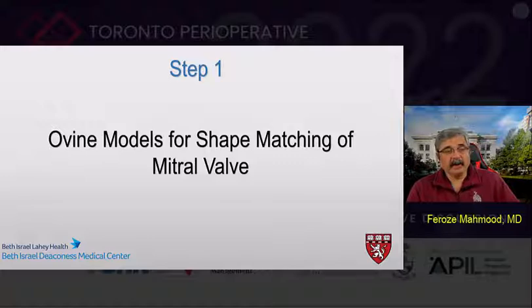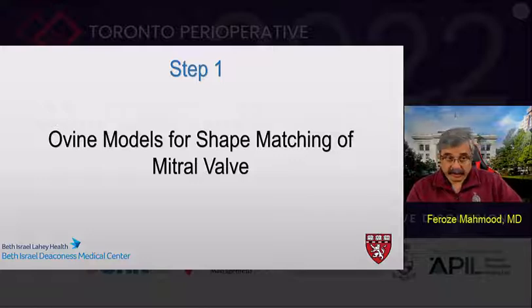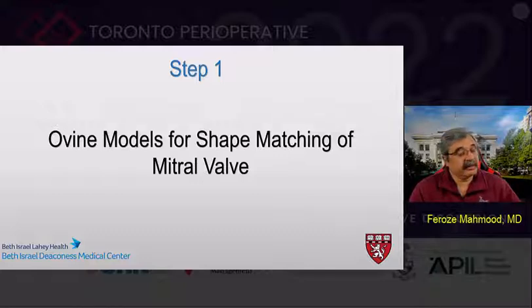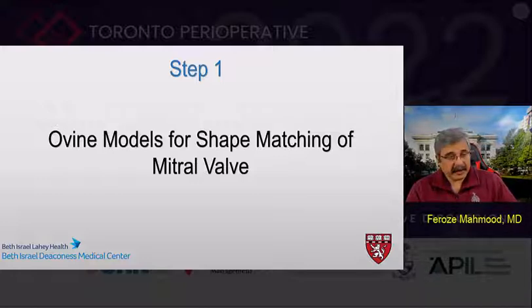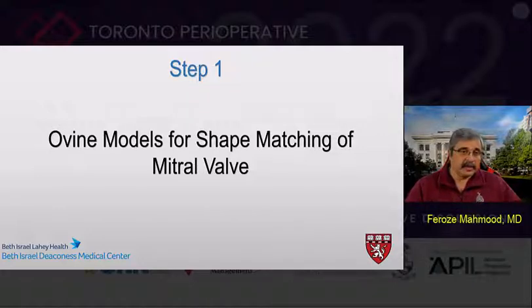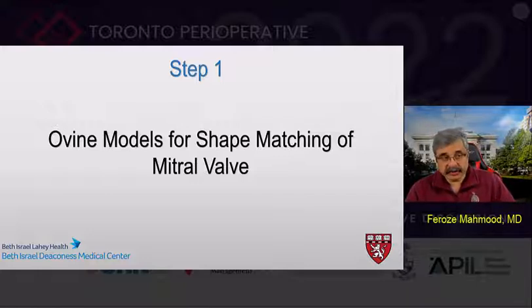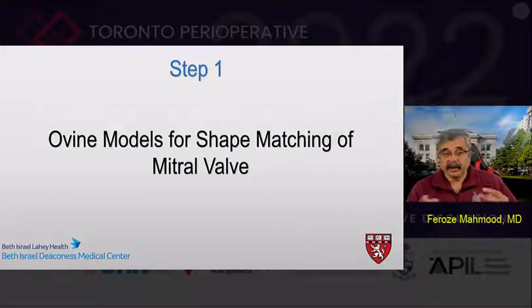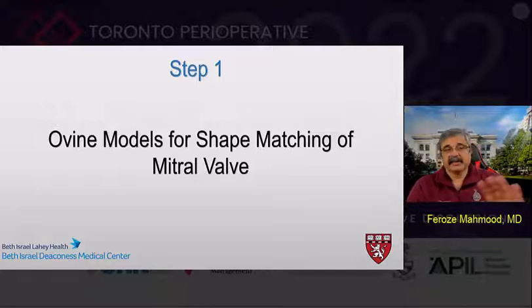In step one, they took ovine models of mitral valve, placed fiduciary markers on the surface of the valve, and let these valves be implanted in a pulse duplicator in a micro-CT — about eight to ten mitral valves. This initial experiment was done in a prior publication to develop a normal-looking model of the mitral valve in digital space. With those fiduciary markers, they were able to define the surface geometry, the zone of coaptation, and the annular behavior and displacement using ovine mitral valves in a pulse duplicator during systole and diastole.